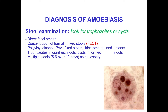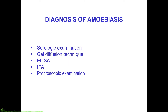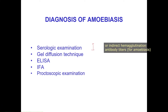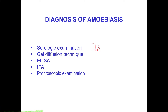An example of an Entamoeba histolytica trophozoite shows a pseudopodium forming and ingested red blood cells. Other methods of diagnosing amoebiasis include serologic examination such as IHA, gel diffusion techniques, ELISA, and immunofluorescence, as well as proctoscopic examination with biopsy or aspiration of mucus to look for hematophagous trophozoites.